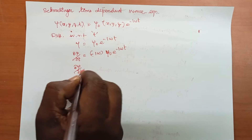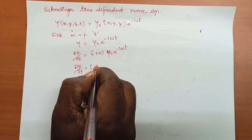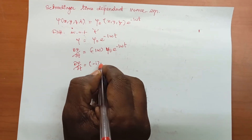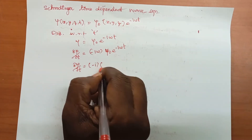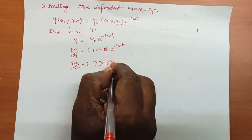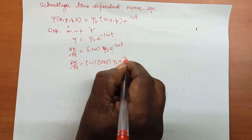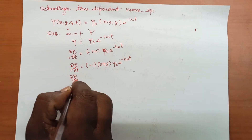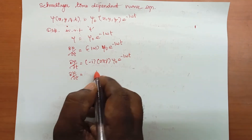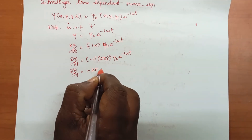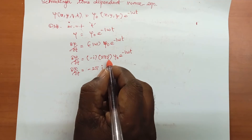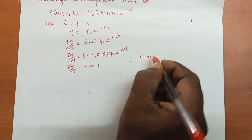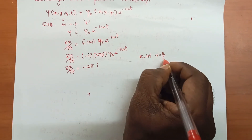So, ∂ψ/∂t is equal to minus i into ω, where ω equals 2πν. So ∂ψ/∂t equals minus 2πν into ψ₀ e to the power minus iωt. Now, since E = hν, we have ν = E/h.